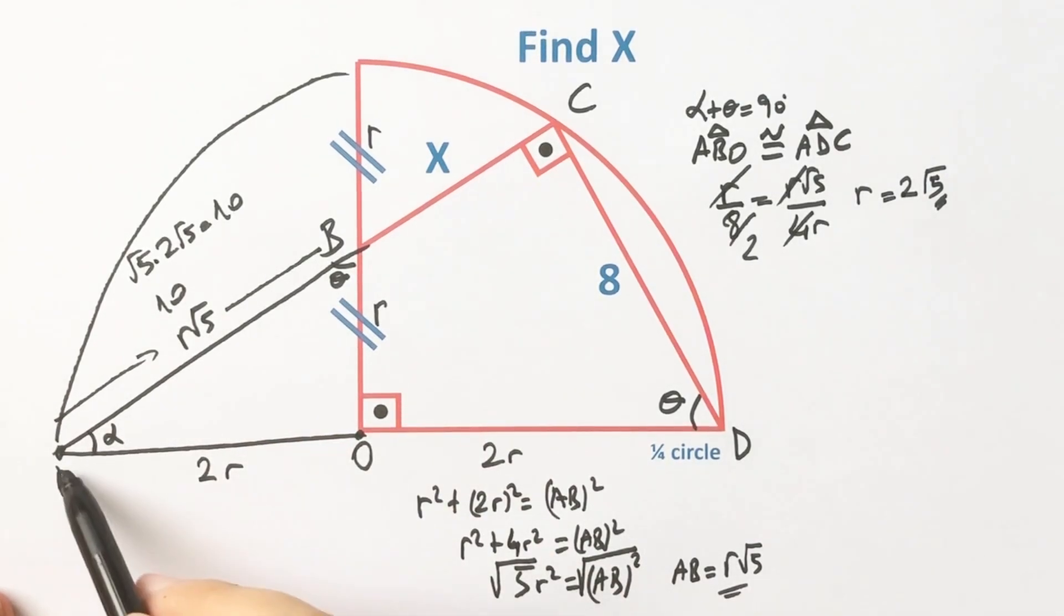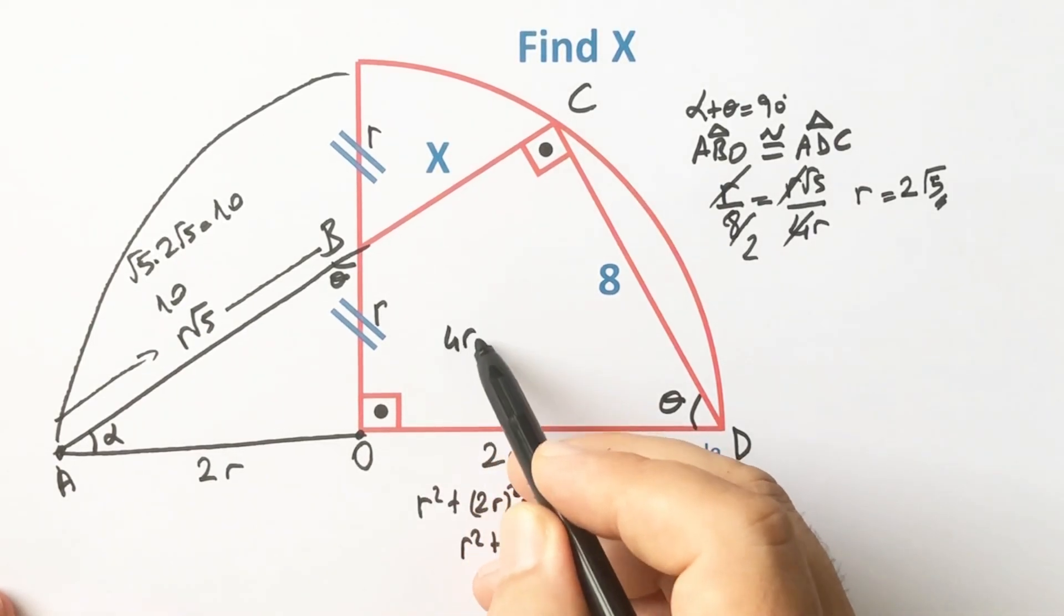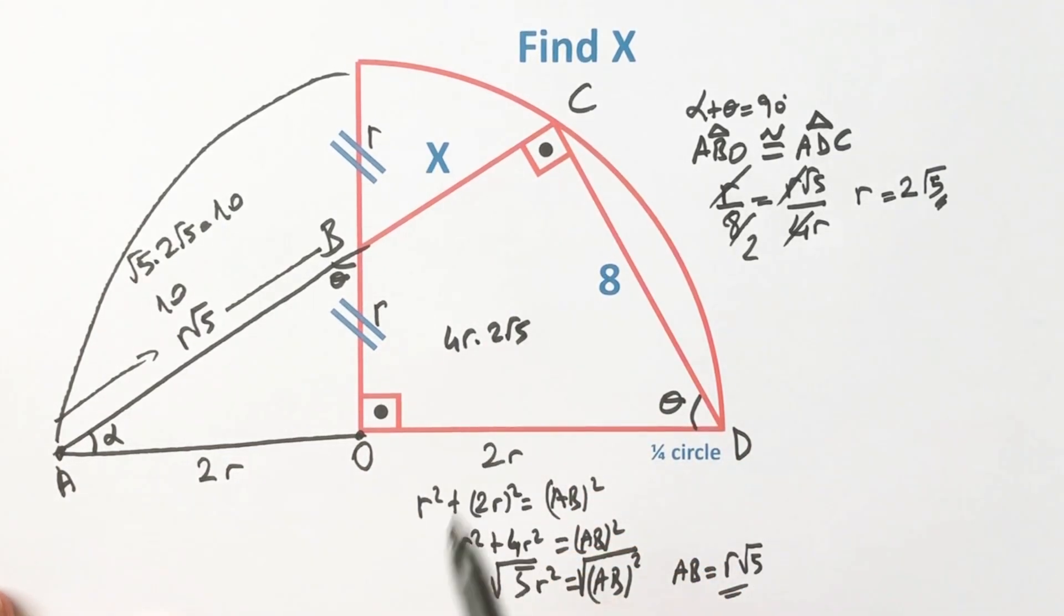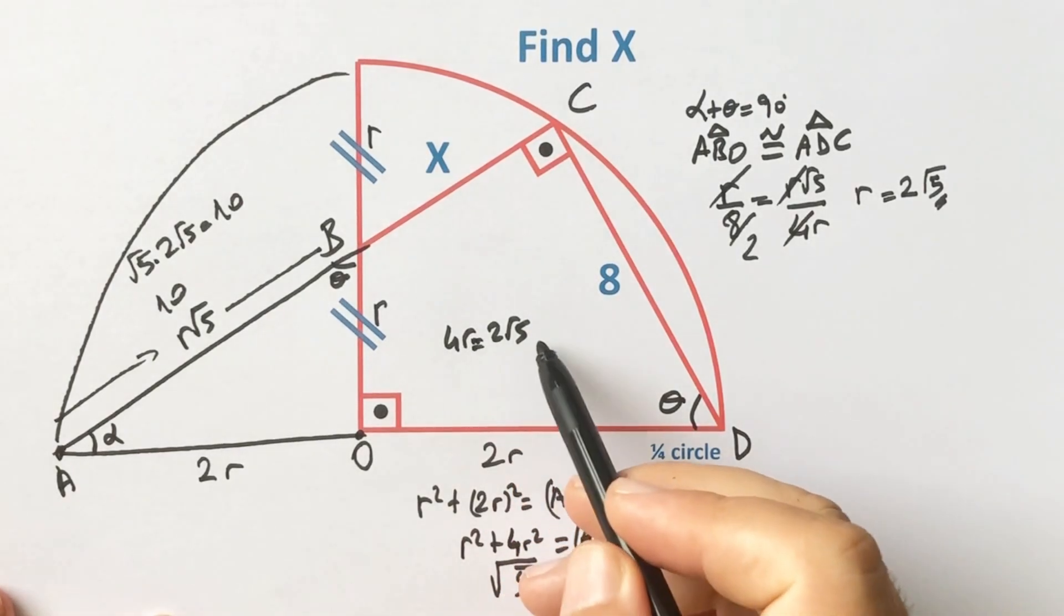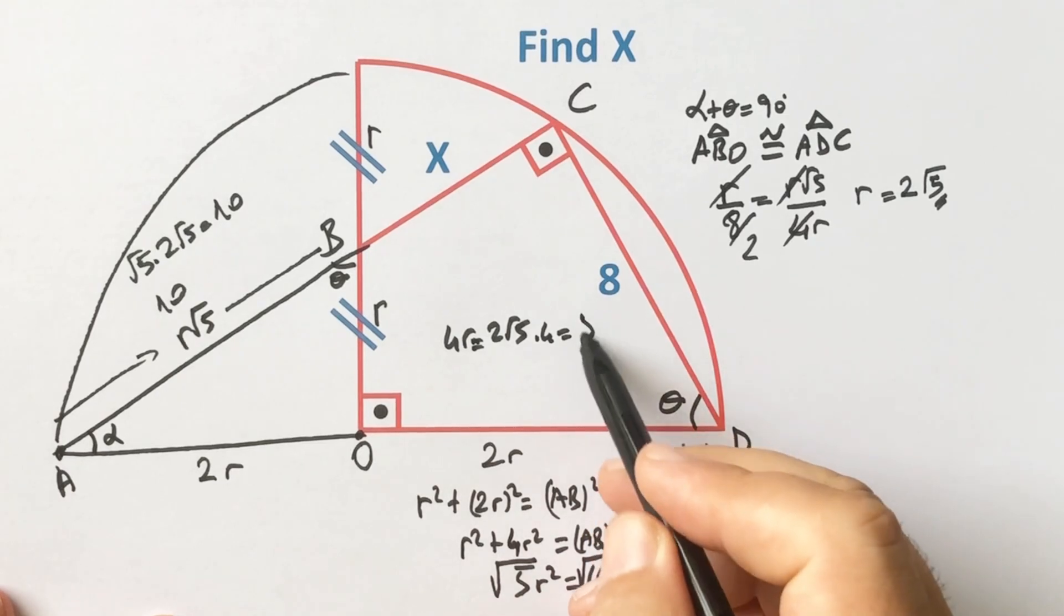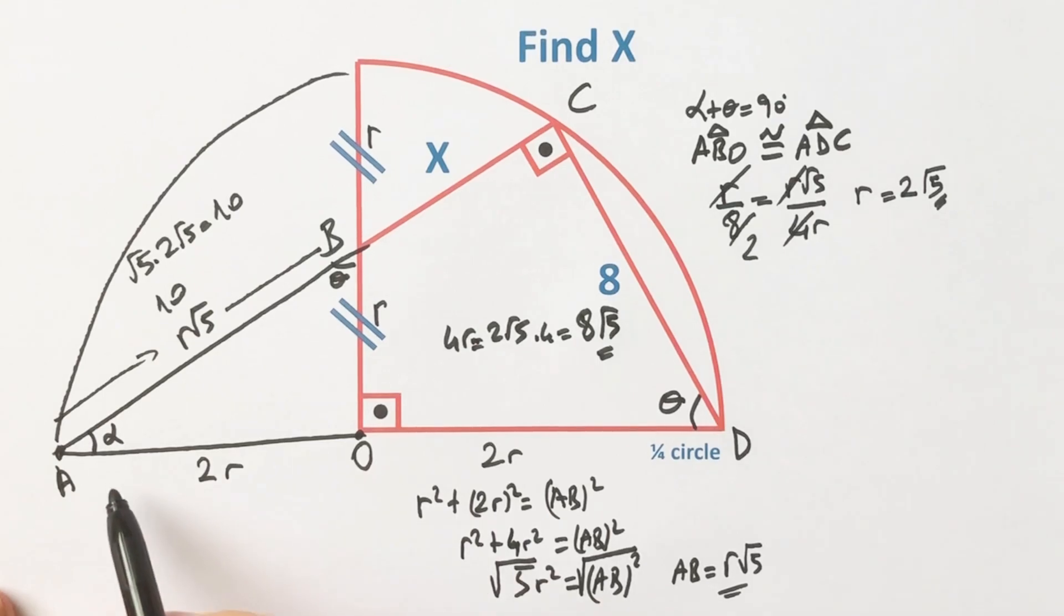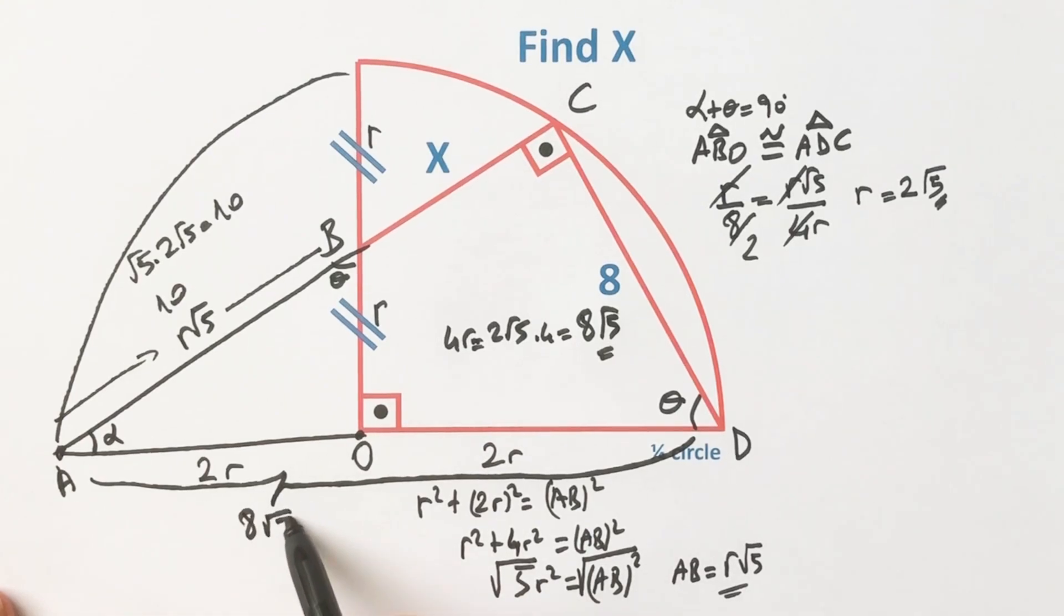Length of AD equals 4R. Since R equals 2√5, therefore length of AD equals 8√5. This equals 8√5.